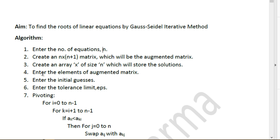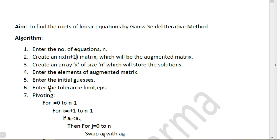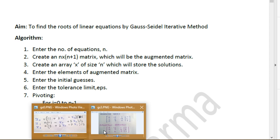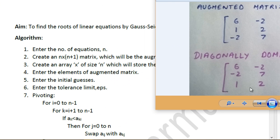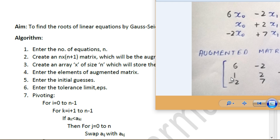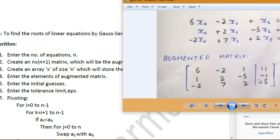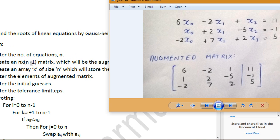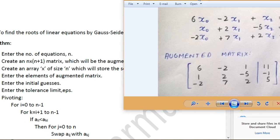Next, we create a matrix of size n × (n+1). In C++, this is a two-dimensional array of size n × (n+1). We do this to store the augmented matrix, which has the same number of rows as unknowns but one extra column to store the RHS of each equation. We also create an array x of size n to store the solutions.